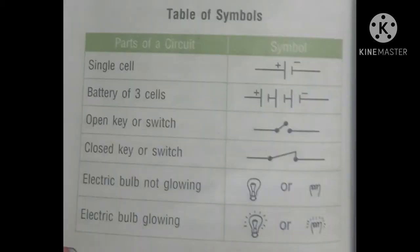Table of symbols. A single cell is represented by a big line and a small line — the big line represents the positive terminal and the small line represents the negative terminal. In a battery, the positive terminal of one cell is connected to the negative terminal of the other cell. This is a battery of three cells: positive, negative, positive, negative, positive, negative.